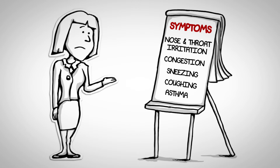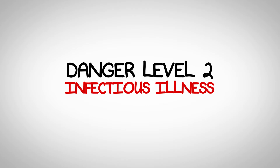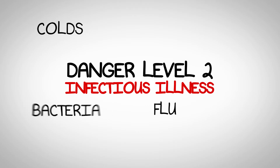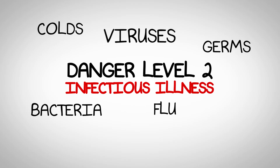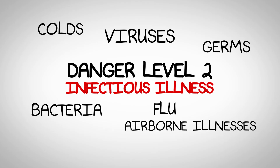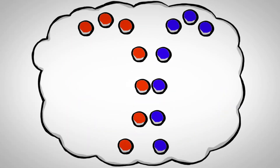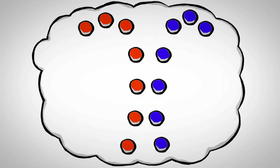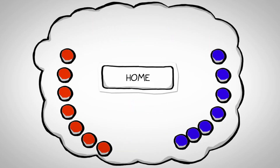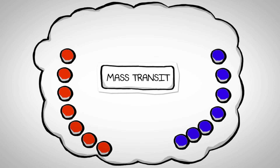Have you ever said, "I'm going outside for a breath of fresh air"? Danger level 2 contaminants are infectious illness in the form of colds, flu, bacteria, germs, and viruses — airborne illnesses or microorganisms. These germs, viruses, and bacteria are naturally carried in by animals and family members from the outside. Once in the house, they go airborne and get sucked into the air distribution system and circulated around the home. I'm sure you can relate to the transferring of illness by sick people present in the same home, office, school, or mass transit vehicle.